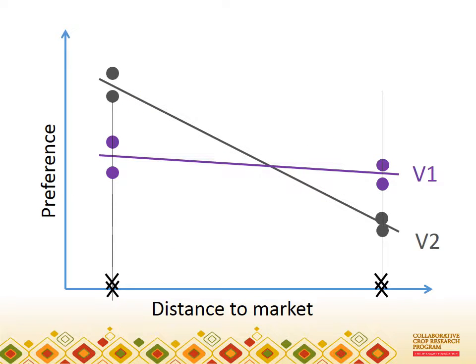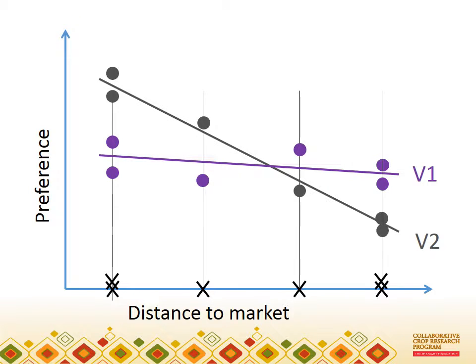Some replication of sites at each distance is probably a good idea. If I choose a site close to market and another far away, then they will probably differ in many characteristics in addition to distance from market. Having several sites at each distance will help confirm that it is distance, or not some other factor, that leads to differences in preference. I might also want to add some intermediate sites, so that I can check that my straight line response with distance is realistic — and it probably isn't.